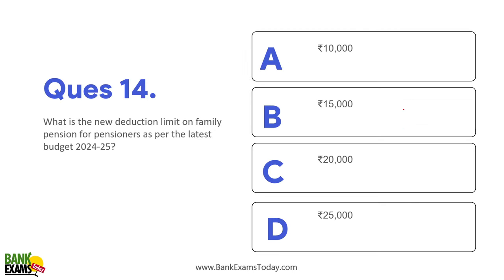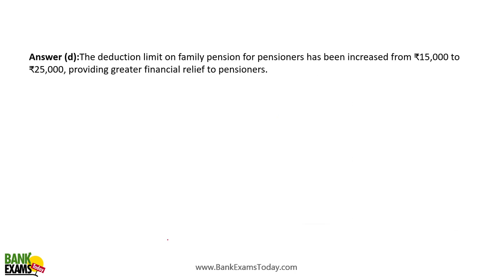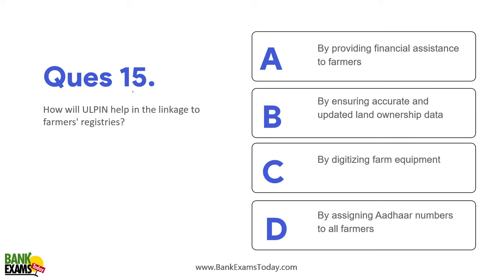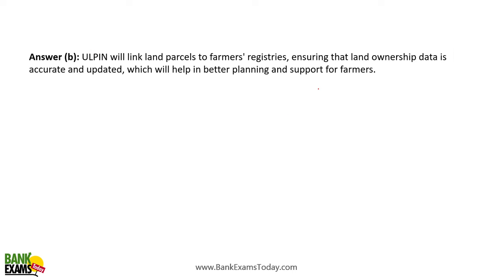What is the new deduction limit on family pension for pensioners as per the latest budget? ₹25,000 is the new deduction for pensioners. How will ULP (Unique Land Pin / Bhu Aadhaar) help in linkage to farmers' registries? Every land parcel will have a unique ULP, and by ensuring accurate and updated land ownership data, it will be linked to the farmers' registries.